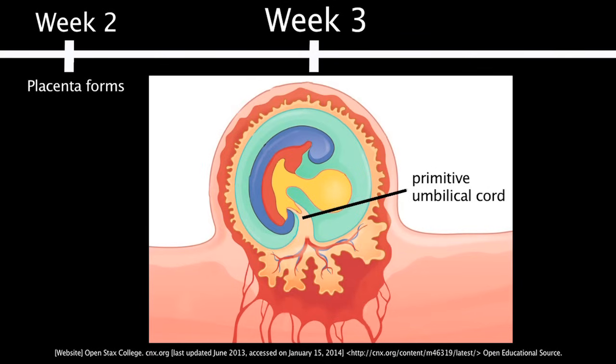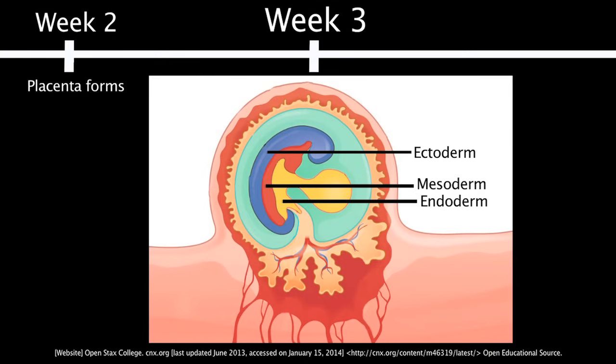Also at this time, the blastocyte develops into a three-layer disc. The three layers are the endoderm, mesoderm, and ectoderm.